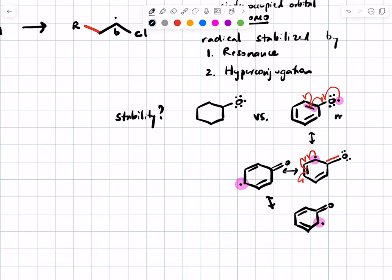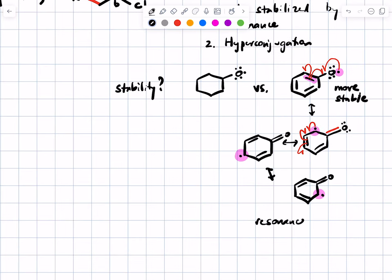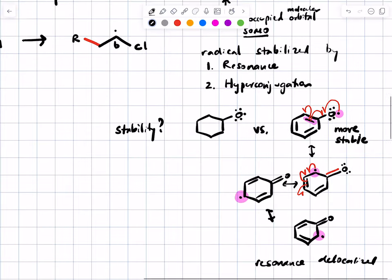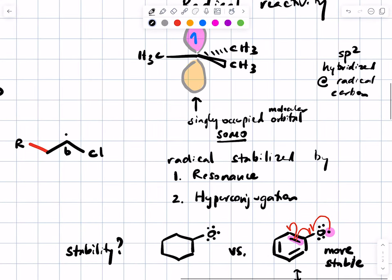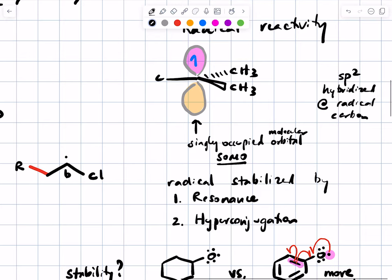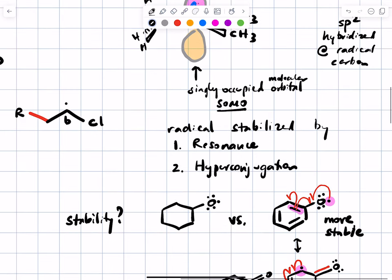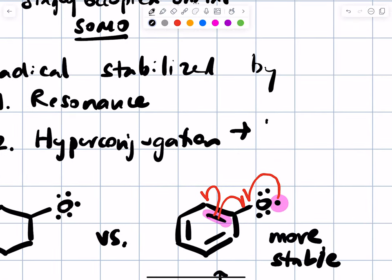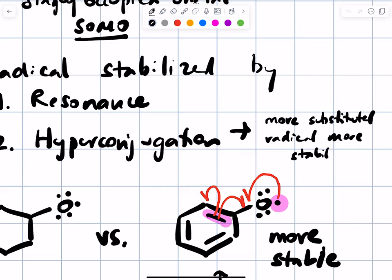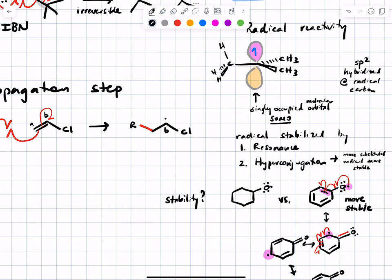So the radical on the right is more stable because of resonance delocalization. Similarly, where does hyperconjugation play in? Hyperconjugation is about donation of electron density from adjacent carbon-hydrogen bonds into the singly occupied orbital. This suggests that just like more substituted carbocations are more stable, more substituted radicals are more stable. Radical stability tracks with carbocation stability. A lot of the things you've learned for the stability of carbocations will also work with radicals.